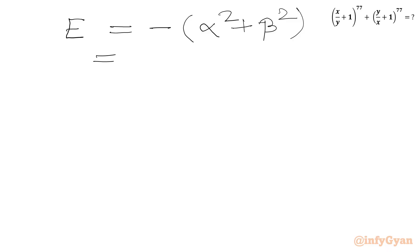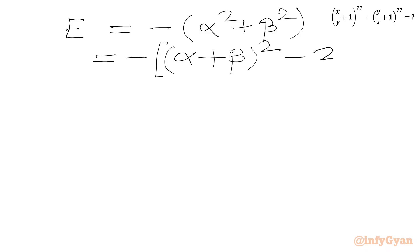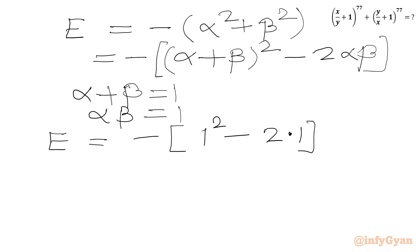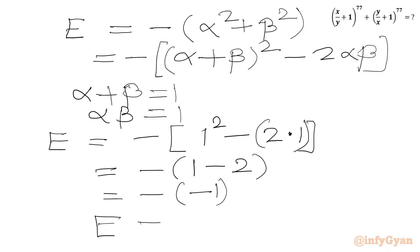Using the algebraic identity: alpha² + beta² = (alpha + beta)² - 2*alpha*beta. So E = -[(alpha + beta)² - 2*alpha*beta]. Substituting alpha + beta = 1 and alpha*beta = 1: E = -[1² - 2(1)] = -[1 - 2] = -(-1) = 1. So our final answer is E = 1.